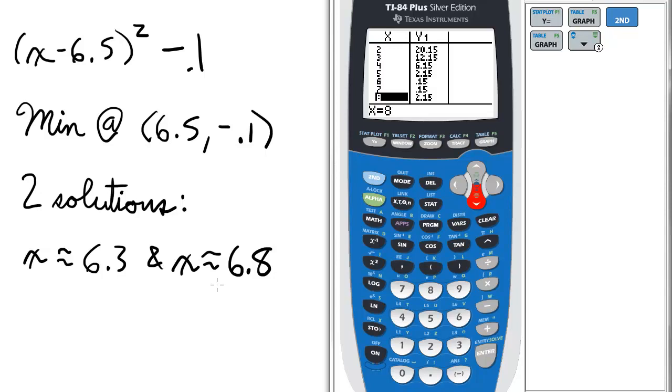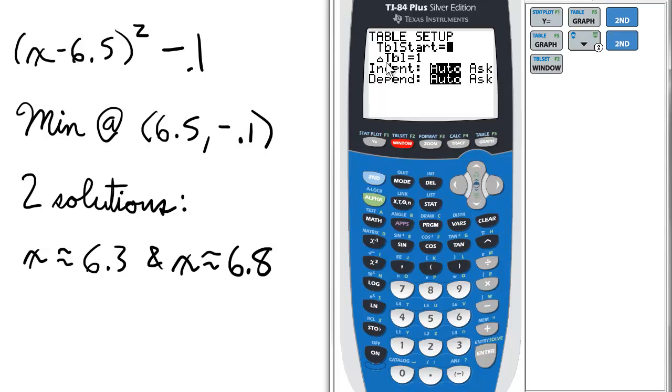So please keep this in mind. When trying to find out sign changes in a polynomial function, find values close to 0 and change the interval. So you want to go to table set and change your delta x right here, the change in table.